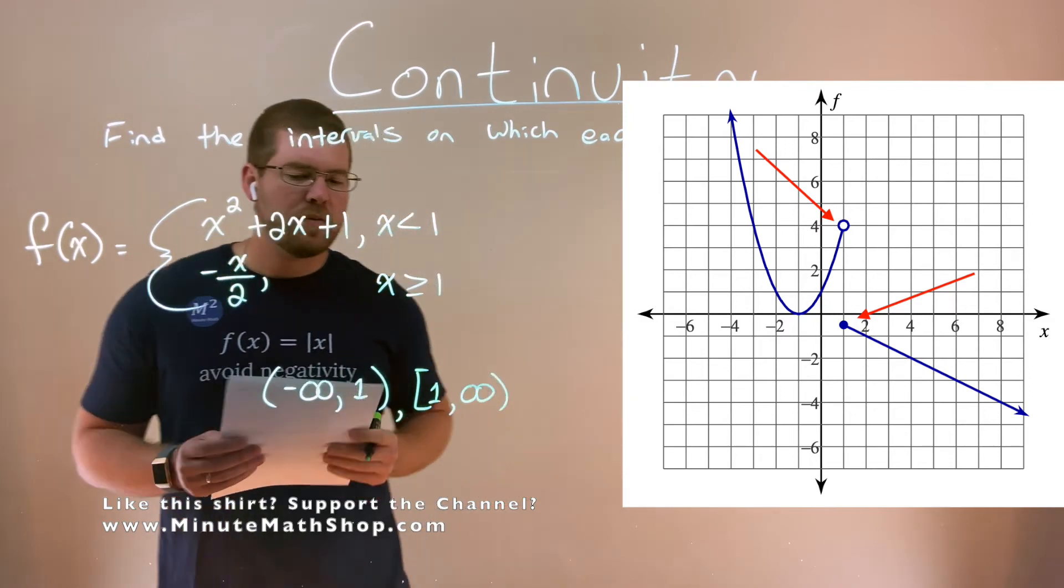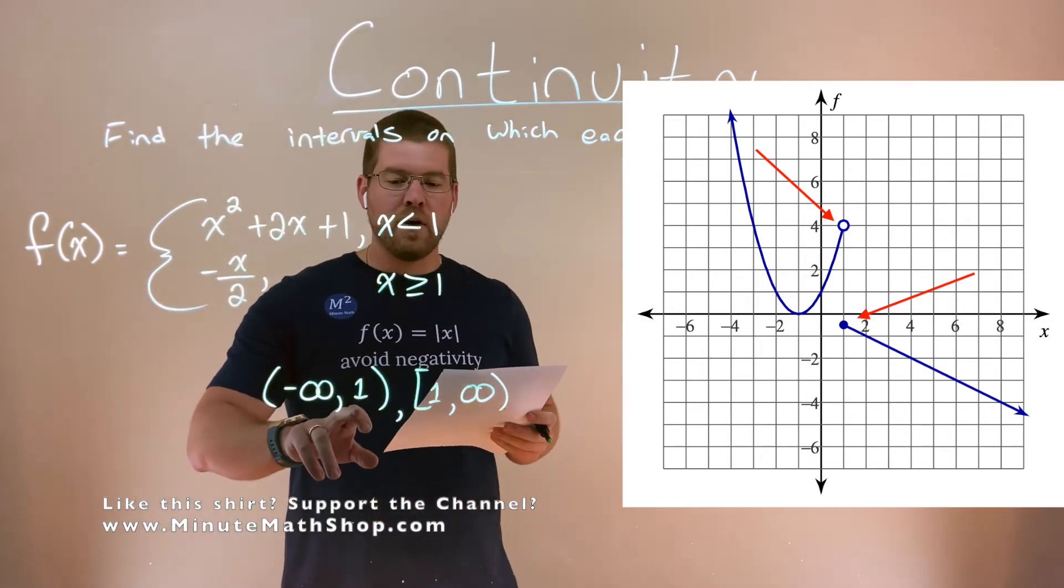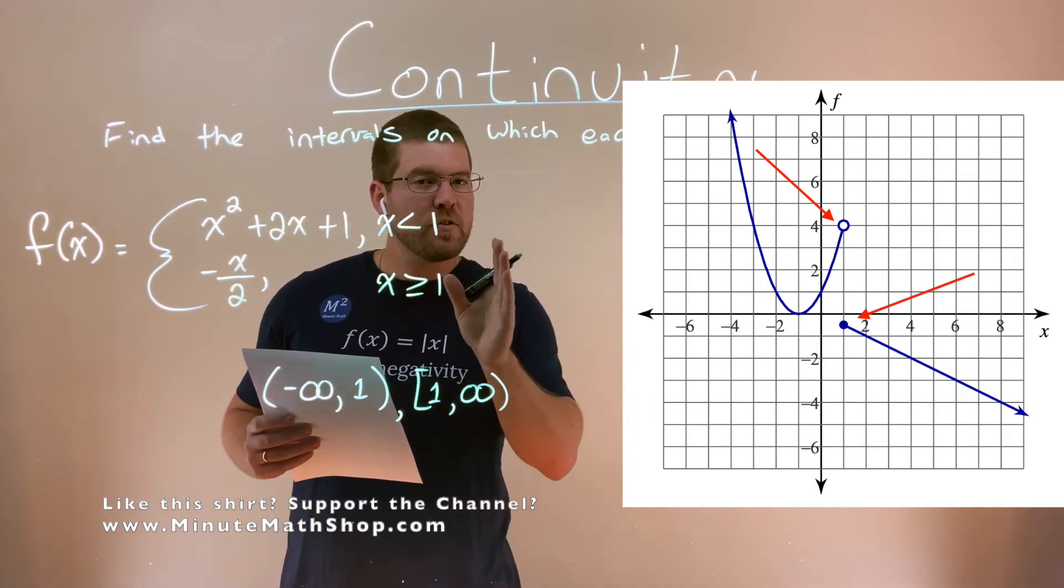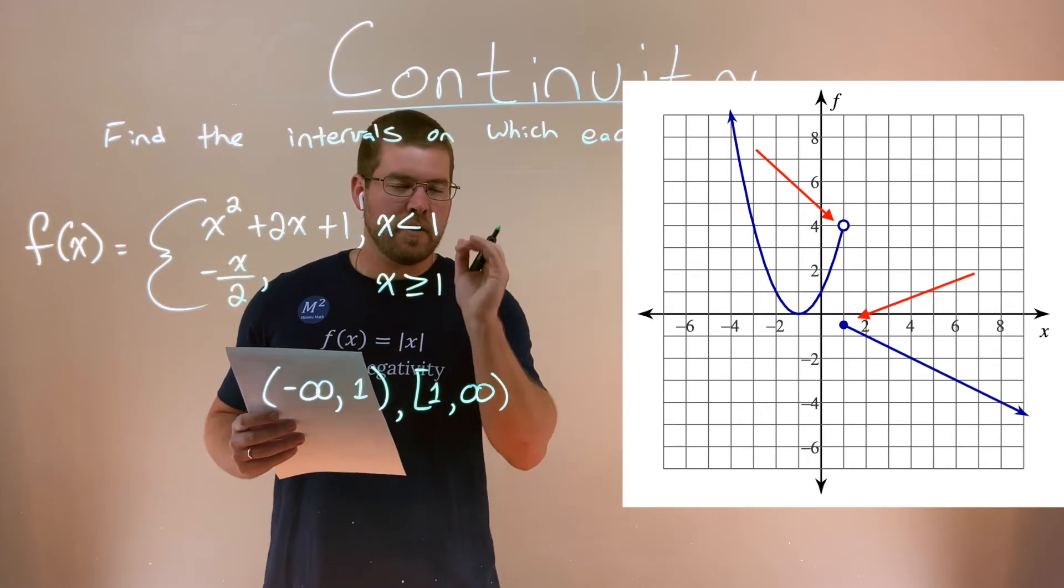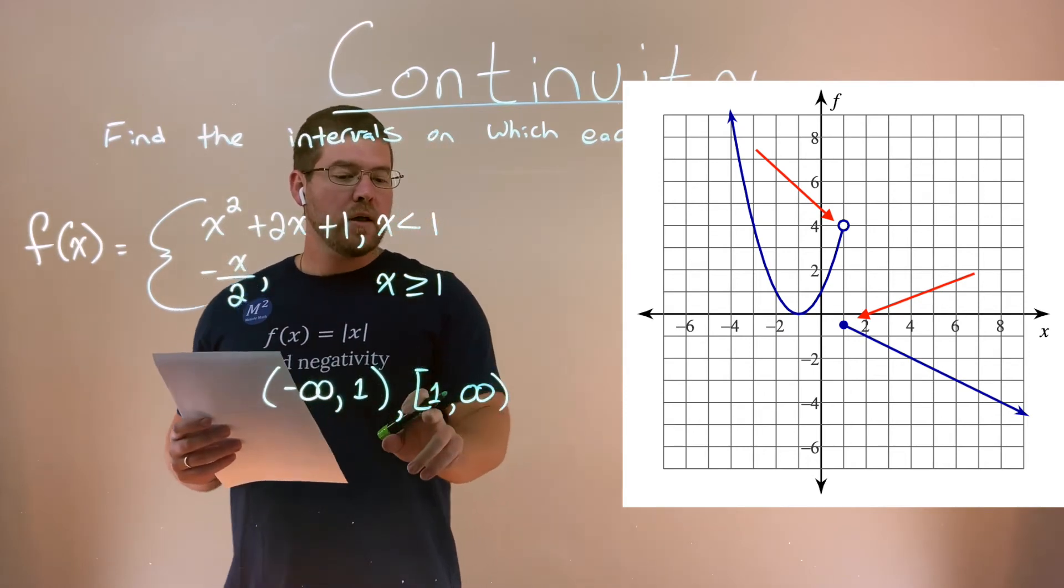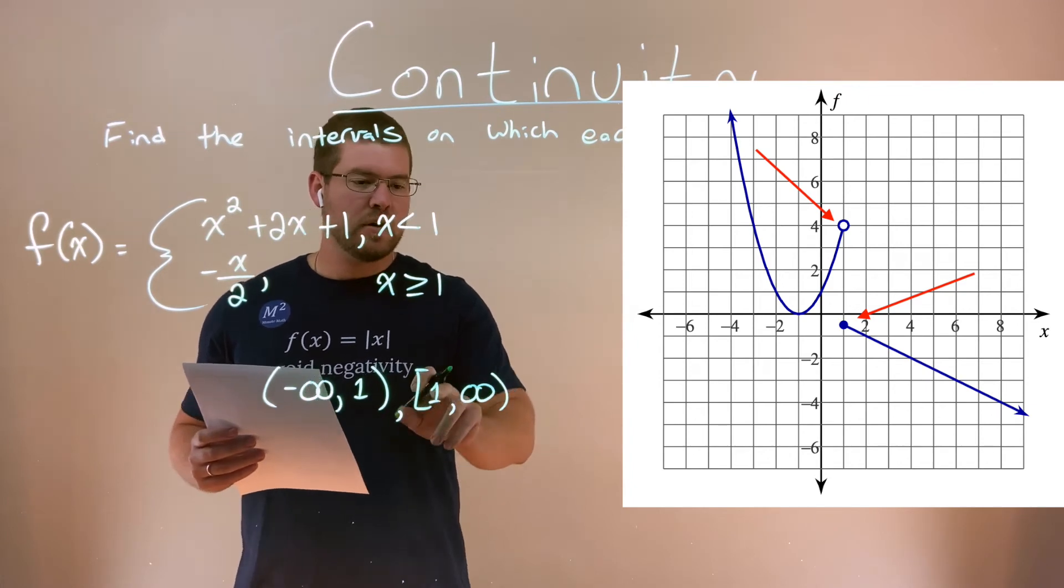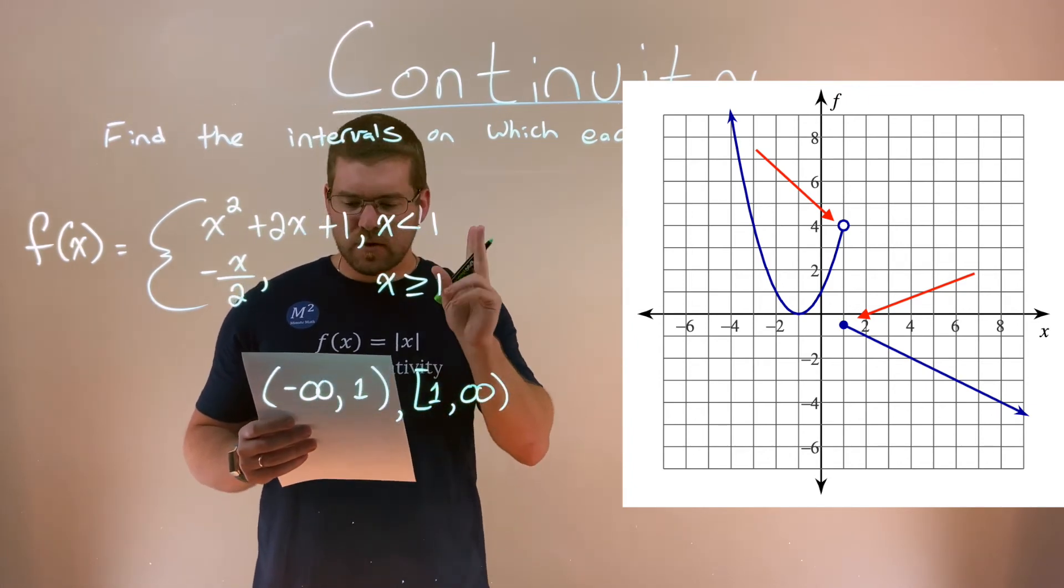And the reason here, the difference between these two, is where at the upper part where the open circle is, it's continuous everywhere up to that open circle, right there at that 1. But it's continuous at the closed circle part, all the way to positive infinity. That's a thing to note there.